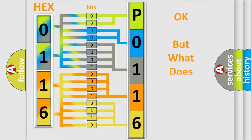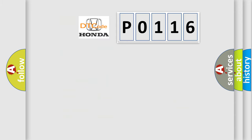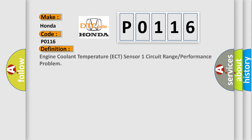We now know in what way the diagnostic tool translates the received information into a more comprehensible format. The number itself does not make sense to us if we cannot assign information about what it actually expresses. So, what does the Diagnostic Trouble Code P0116 interpret specifically for Honda car manufacturers?